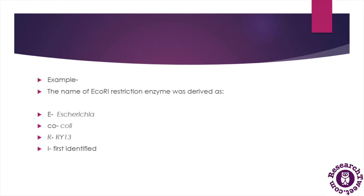Let's understand with an example. The name of the common endonuclease EcoRI is derived as E, co, R, and I — where I is a Roman numeral. The letter 'E' indicates Escherichia, which is the name of the genus of the bacterium from which the restriction enzyme was isolated. 'Co' indicates the species — E. coli. 'R' is the strain RY13 of the E. coli bacterium, and 'I' is the order of identification in that bacterium.